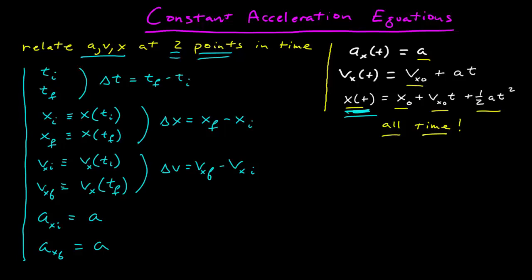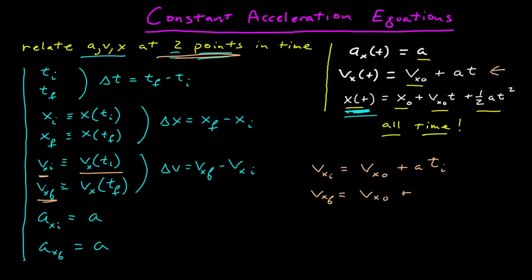So the first thing I'm going to do is start with velocity. My initial velocity is equal to the velocity function evaluated at the initial time. That's my velocity at time equals zero, plus a times the initial time. My initial time doesn't have to be zero — it's just the earlier of the two points in time that I'm interested in. My final velocity is going to be the velocity at t equals zero, plus a times the final time.